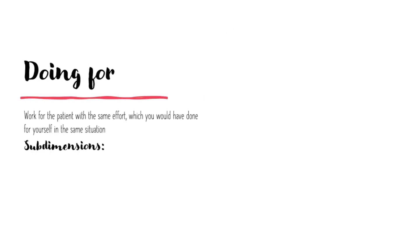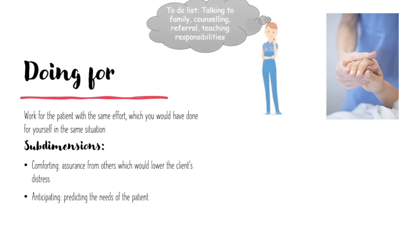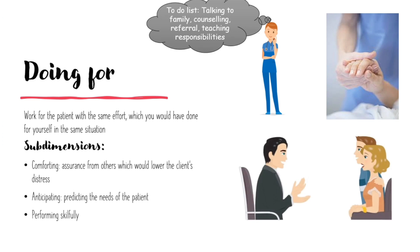Third concept is Doing For. It refers to working for the patient with the same effort the nurse would have put in for herself if in the same situation. Here we have Comforting — whenever we go through any hard phase of life, we need assurance from others which would lower our distress; that is called Comforting. Next is Anticipating, which means to expect or predict the needs of the patient. Suppose for our patient, we can plan to talk to her family, provide counselling, refer the couple to a counsellor, teach them to share responsibilities, etc. — these are needs we can predict before doing. Next comes Performing Skillfully. After anticipating the needs, we have to perform the actions carefully to fulfil them.